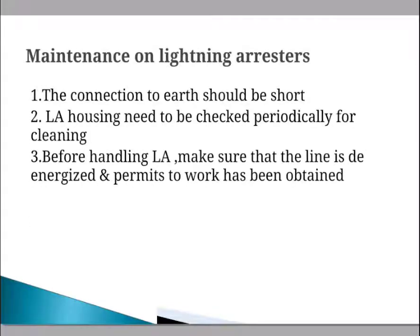For maintenance of the lightning arrester, we have to check that the connection to earth is secure. The lightning arrester housing needs to be checked periodically for cleaning — if dirt has accumulated, we must clean it. Before handling the lightning arrester, make sure the line is de-energized and a permit to work has been obtained from higher authorities.